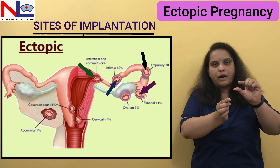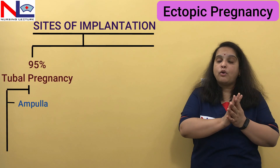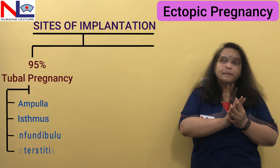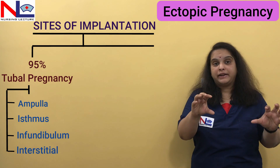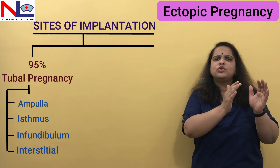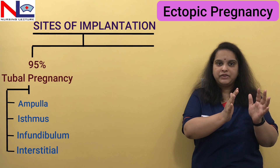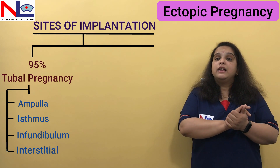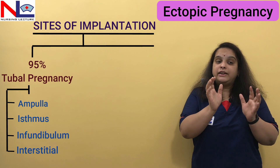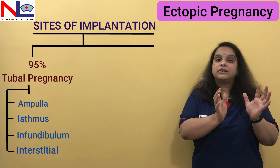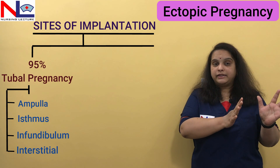The interstitial part is the narrowest part. These are the four basic parts where implantation can occur in tubal pregnancy, and the most common site is the ampulla. Overall, 95% of ectopic pregnancies are implanted in the tube.